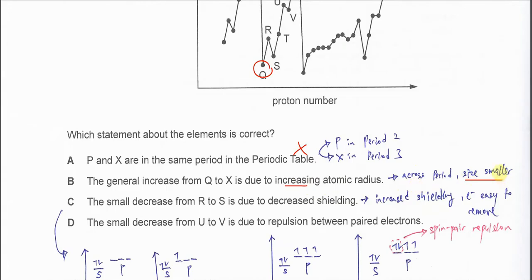So the general increase is because the proton number increases with constant shielding effect. So it's going to increase the IE across the period. Therefore, the second statement is also wrong.